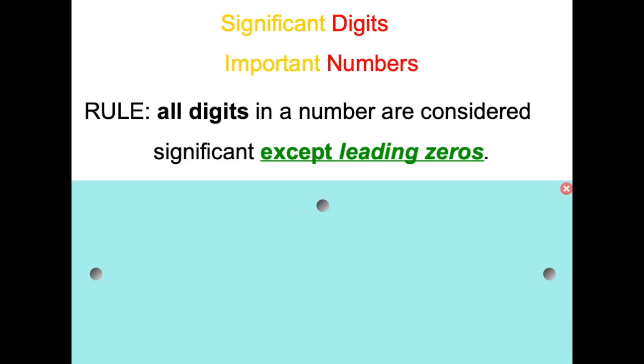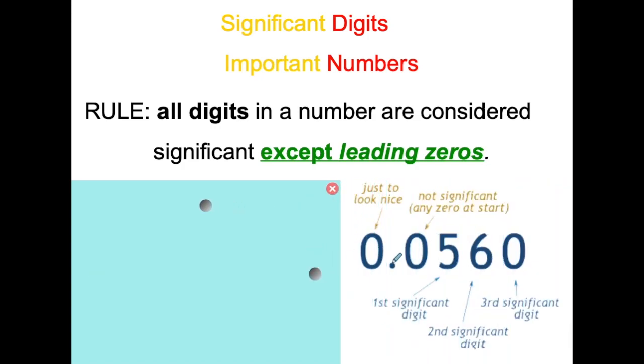So this rule: all digits in a number are considered significant except for what we call leading zeros. The first thing you need to be able to do is count how many significant digits are in a given number. So here is an example right here: 0.0560.